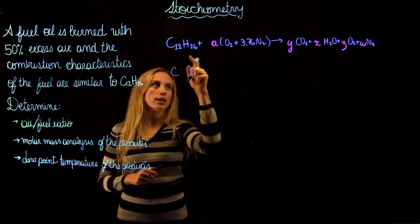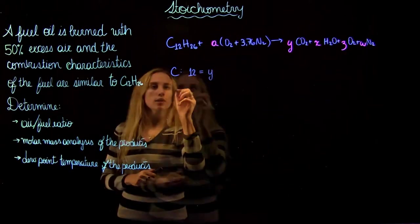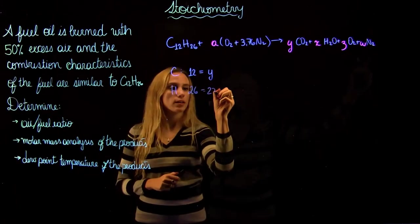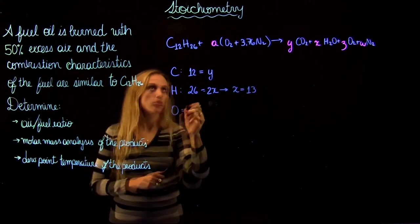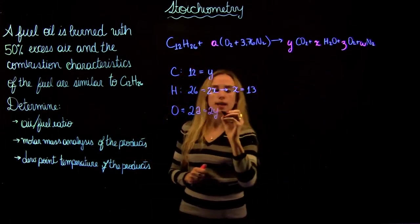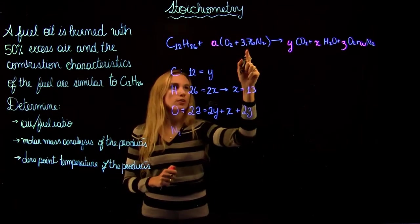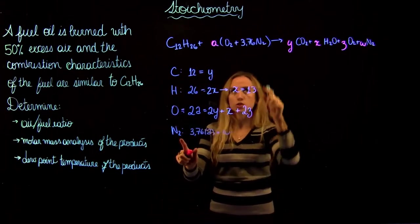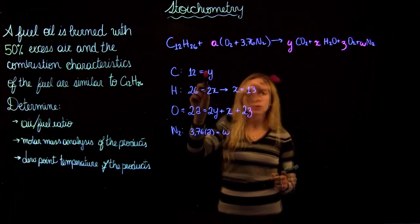For carbon C, we have 12 in the reactants, giving Y = 12. For hydrogen H, we have 26 on the reactants side equal to 2X, so X = 13. For oxygen O, we have 2A equals 2Y plus X plus 2Z. For nitrogen, 3.76A equals W. We have four equations and five unknowns, so we cannot solve it directly.